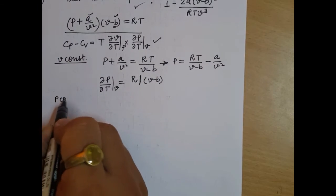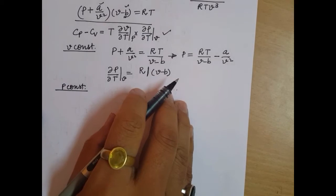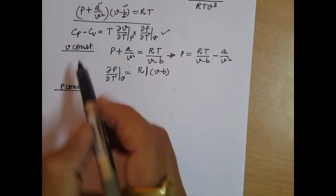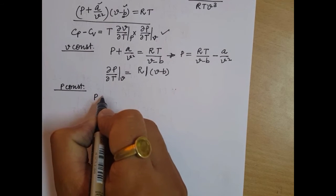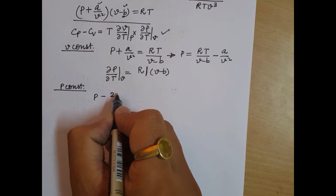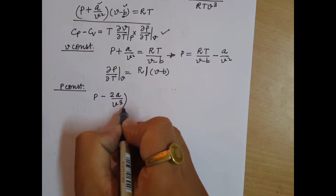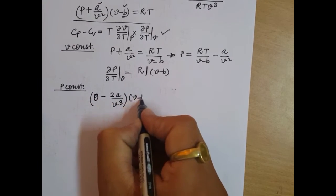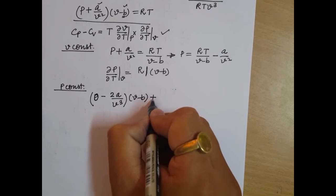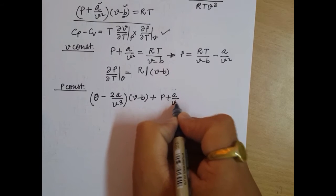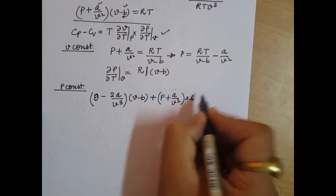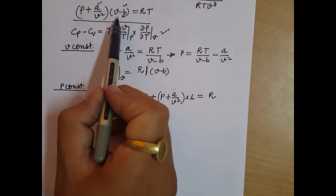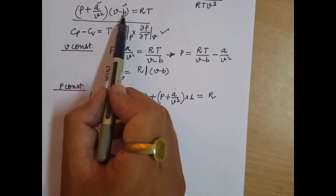Now, if we keep pressure constant and differentiate the Van der Waals equation with respect to temperature, we apply the product rule. Differentiating P plus A by V squared into V minus B equals RT: the derivative of the first factor, which gives minus 2A by V cubed times (∂V/∂T), multiplied by V minus B, plus P plus A by V squared times 1 times (∂V/∂T), equals R.